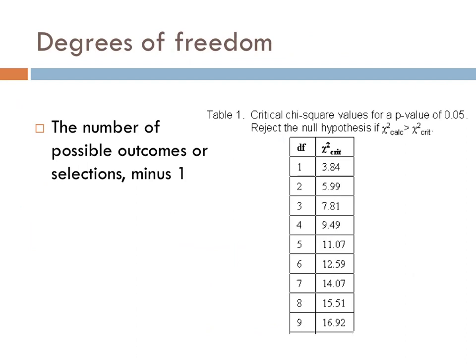Degrees of freedom are the number of possible outcomes in a given event, minus one. Flipping a coin, for instance, there are two possible outcomes, heads or tails. If you subtract one from the two possible outcomes, that leaves you with one degree of freedom.